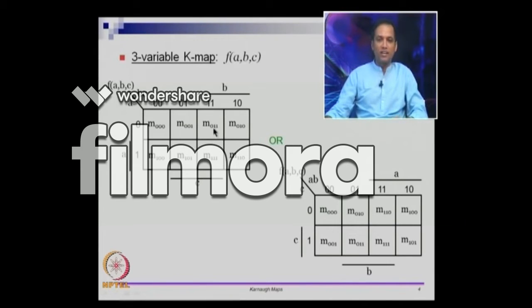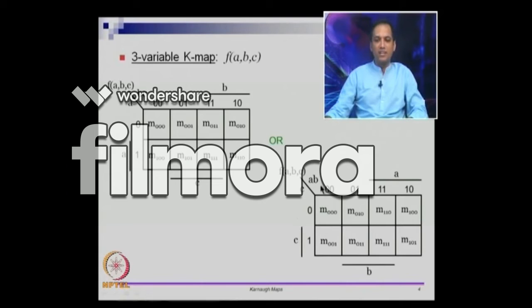If you notice the second bit is turned on in min terms m011, m010, m111, and m110 — which means for b equals 1, these are the 4 min terms where b is in the uncomplemented form. Similarly, the 4 cells 0,0,1; 1,0,1; 0,1,1; 1,1,1 capture the information that c is 1 or in the uncomplemented form. In an alternative arrangement, c is along the rows and combinations of a, b are along the columns. You should read bits for a first, then b, then c. So one cell corresponds to a equals 1, b equals 1, and c equals 0, which is m6.